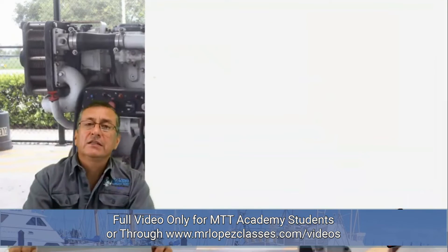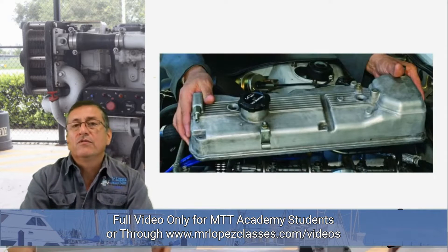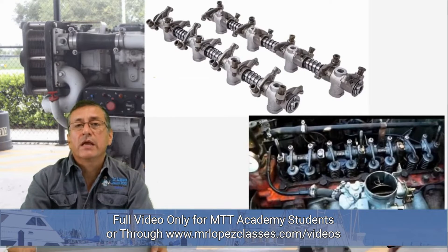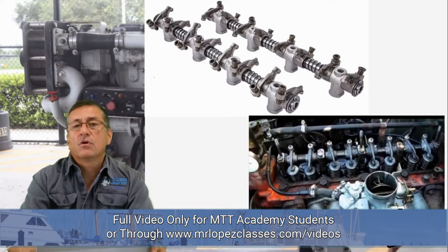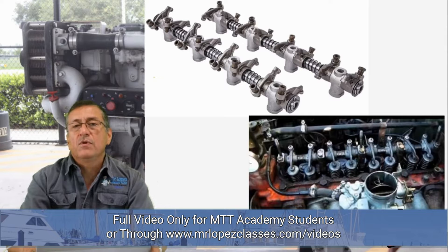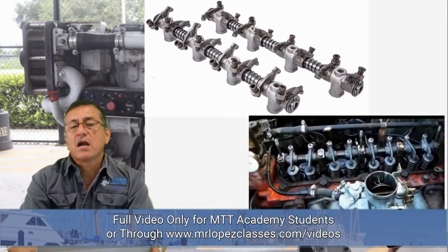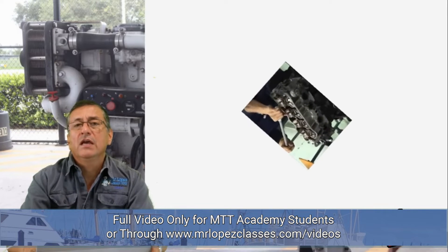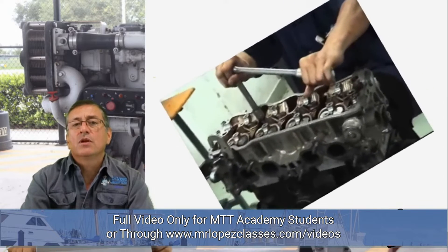The procedure is as follows. The first step is to remove the valve cover. After removing the valve cover, we remove the rocker arm train. We remove the rocker arms slowly — normally there are four or six bolts holding the rocker arm train against the valves. Once the rocker arms are removed, the head is free and we are ready to remove the head.